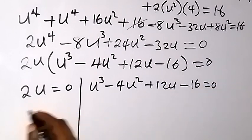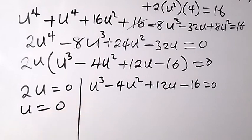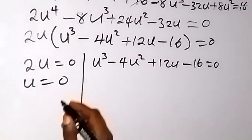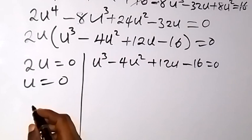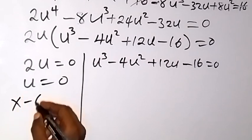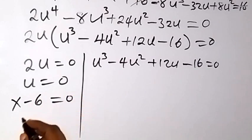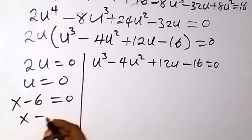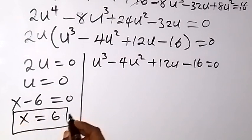From the first case, 2u equals 0 gives u equals 0. Don't forget we let u equal x minus 6, so x minus 6 equals 0, which means x equals 6. So we have our first value of x: x equals 6.